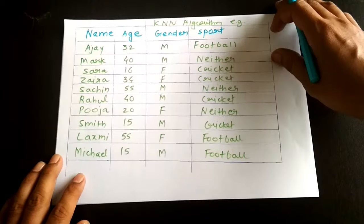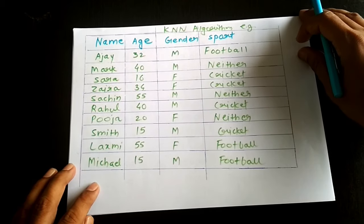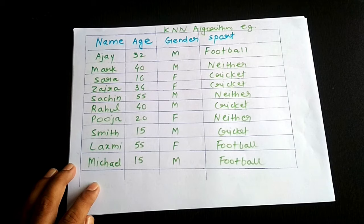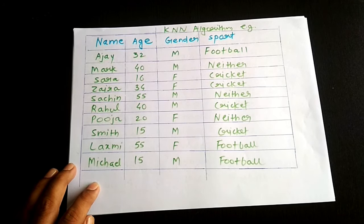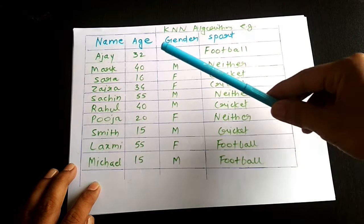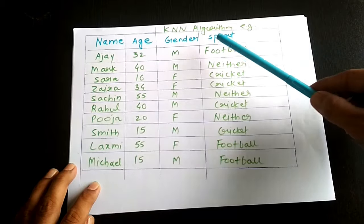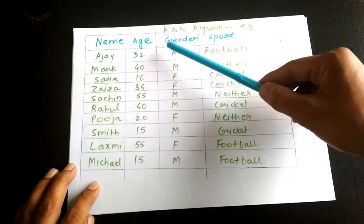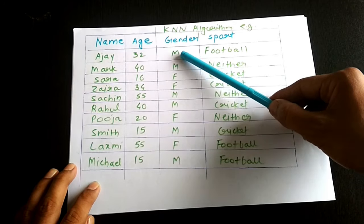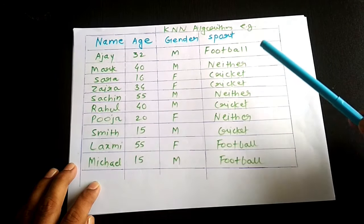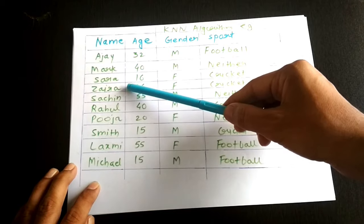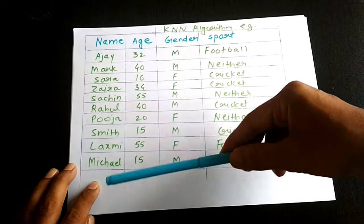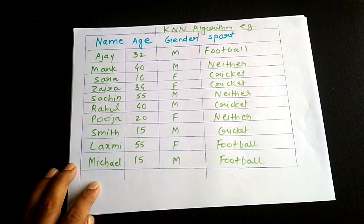Here is the data we'll use to see how KNN actually works. We think we can predict the classification of sport based on age and gender. The dataset contains name, age, gender, and sport — for example, Ajay, age 32, male, likes football. Similarly we have Mark, Sara, Zaira, Sachin, Raul, and others.